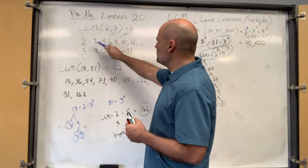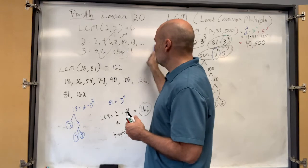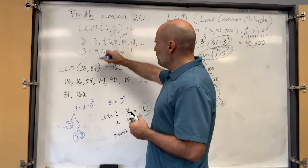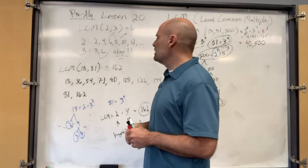So instead of finding the factors, we're listing out the multiples. 2, 4, 6, 8, 10, 12. 3, 6, 9, 12, 15. So you're just circling the first one they have in common, okay?